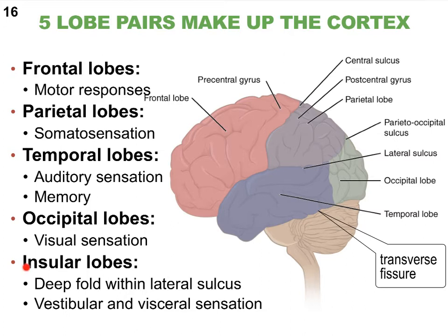The insular lobes deal with sensation related to our vestibular area and the viscera. The viscera are your organs, especially in your thoracic and abdominal pelvic cavity — your lungs, heart, stomach, intestines, bladder. Vestibular refers to equilibrium or balance. Don't confuse vestibular with vestigial — they are different terms.